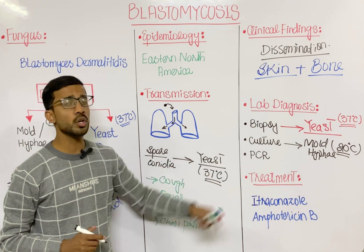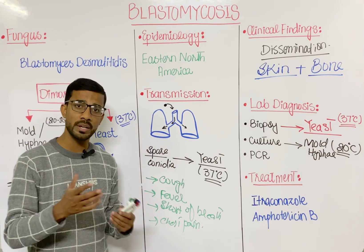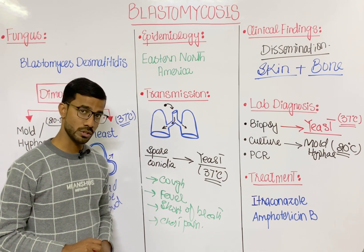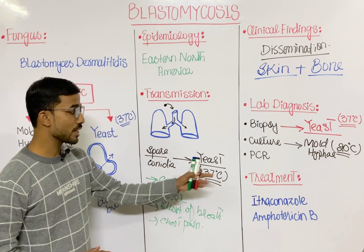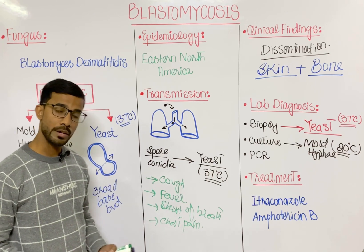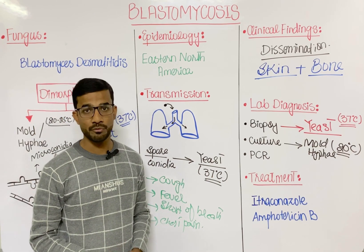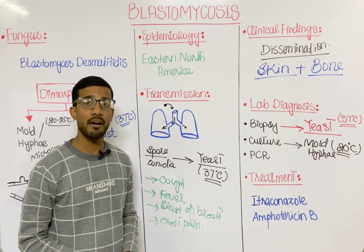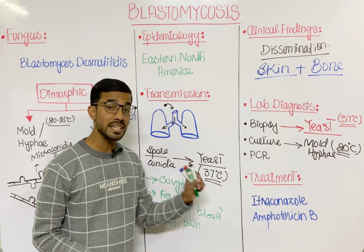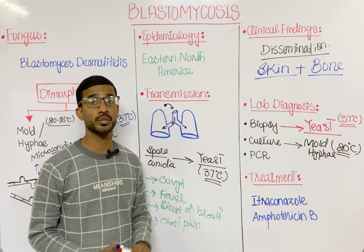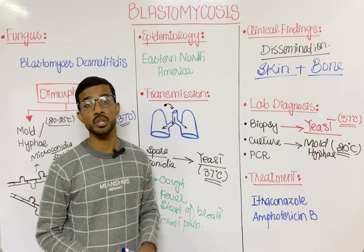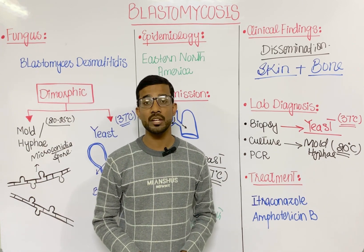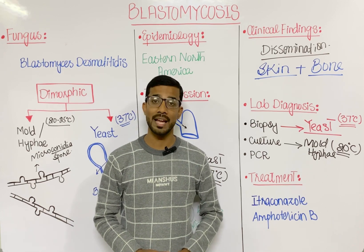You can also use PCR to check the nucleic acid of the fungus. For treatment, the antifungal drug itraconazole is used, and in more severe cases amphotericin B is used. The specific drug choice may vary according to the patient and the location of the infection.